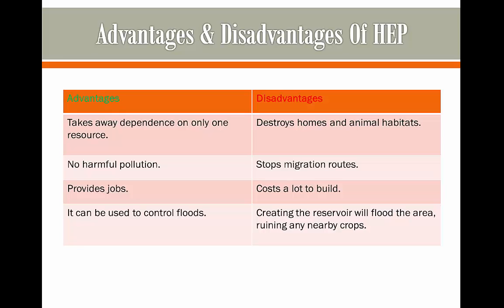For example, the Three Gorges Dam in China cost 25 billion dollars. Also, creating the reservoir will likely flood the area first time around, which can ruin any nearby crops and can also leave people homeless if it floods their homes.